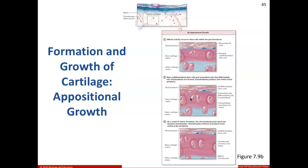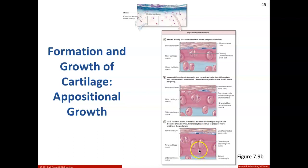And what do chondroblasts do? They are going to start to secrete their new matrix at the periphery. So we see this new cartilage matrix — shown in pink — being secreted. Then once we have this matrix in place, these chondroblasts start to get pushed apart and become chondrocytes, our mature cartilage cells, that will continue to produce more matrix at the periphery.